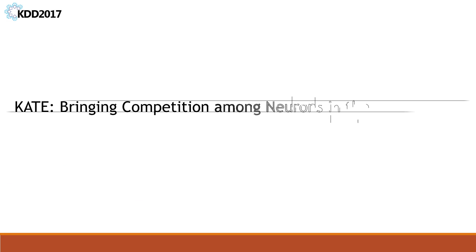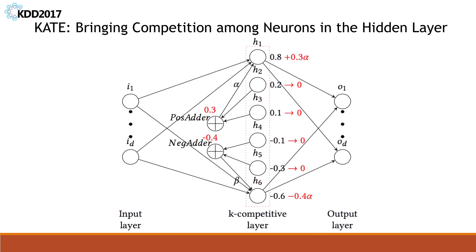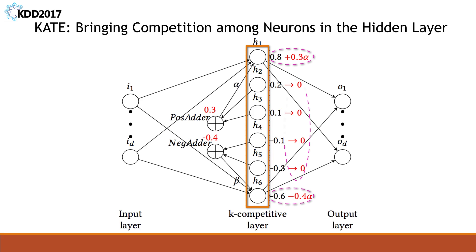We solve the problem by introducing competition into an autoencoder. Specifically, we force neurons in the hidden layer to compete for the right to respond to a subset of the input data. As a result, the specialization of each neuron in the hidden layer is increased and diverse patterns are able to be discovered. Look at this example. In each step of feed forward, winner neurons will take away the energy of the remaining loser neurons, and those loser neurons will be further made inactive.